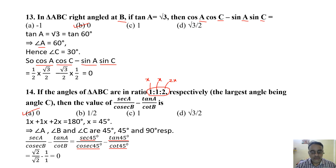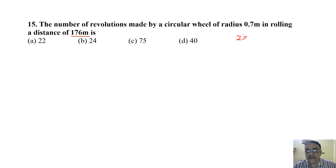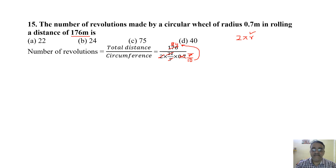Question 15: Number of revolutions made by a circular wheel of radius 0.7 m in rolling a distance of 176 m. Number of revolutions = total distance ÷ circumference = 176 ÷ (2 × 22/7 × 0.7). Substituting 0.7 as 7/10: the 7s cancel and 10 comes up, giving 176 × 10 / (2 × 22) = 40. The correct answer is option D.